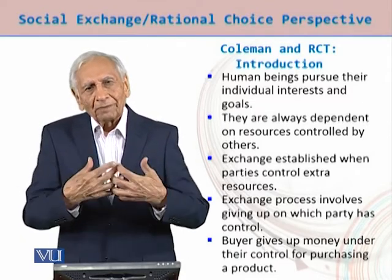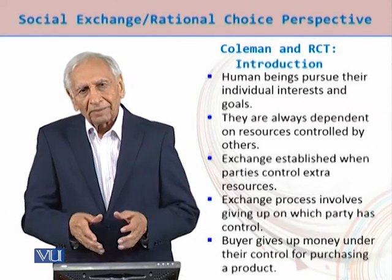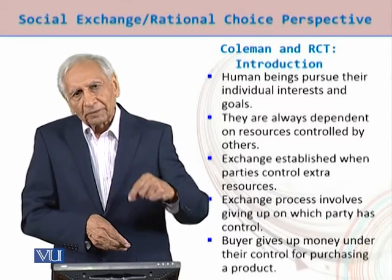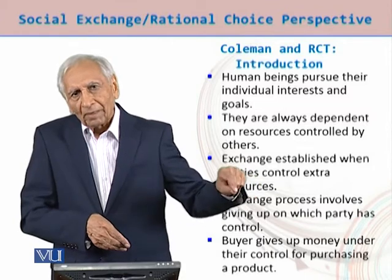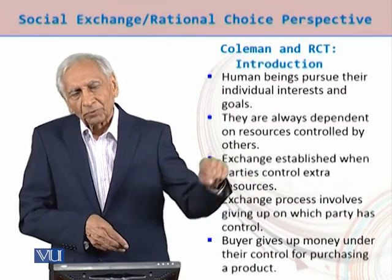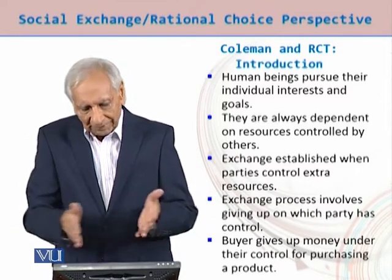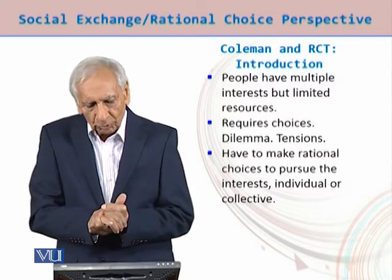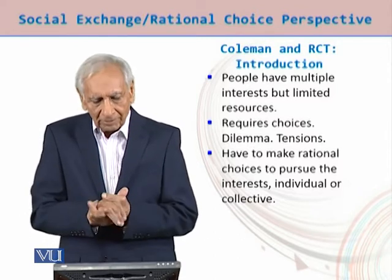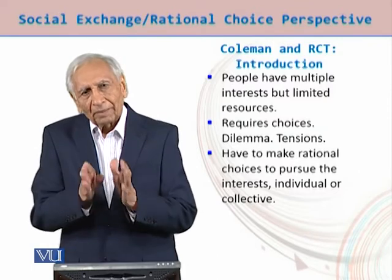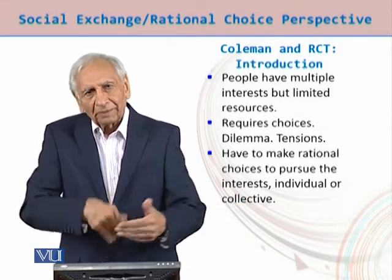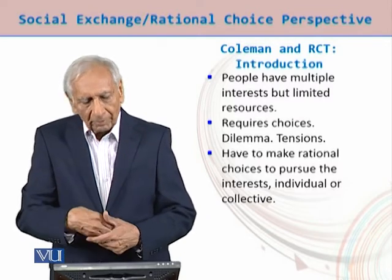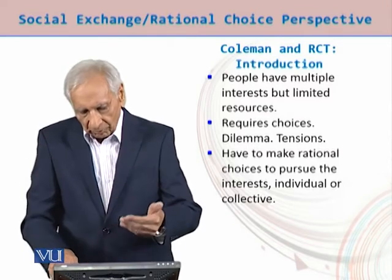Exchange involves giving up what one party controls. For example, a person with money gives it to a seller, who has control over the commodity the buyer wants — and that exchange takes place. Since people have multiple interests but limited resources, this requires a choice dilemma. A person must rank-order their needs and satisfy them according to their interests, and that is how exchange continues.